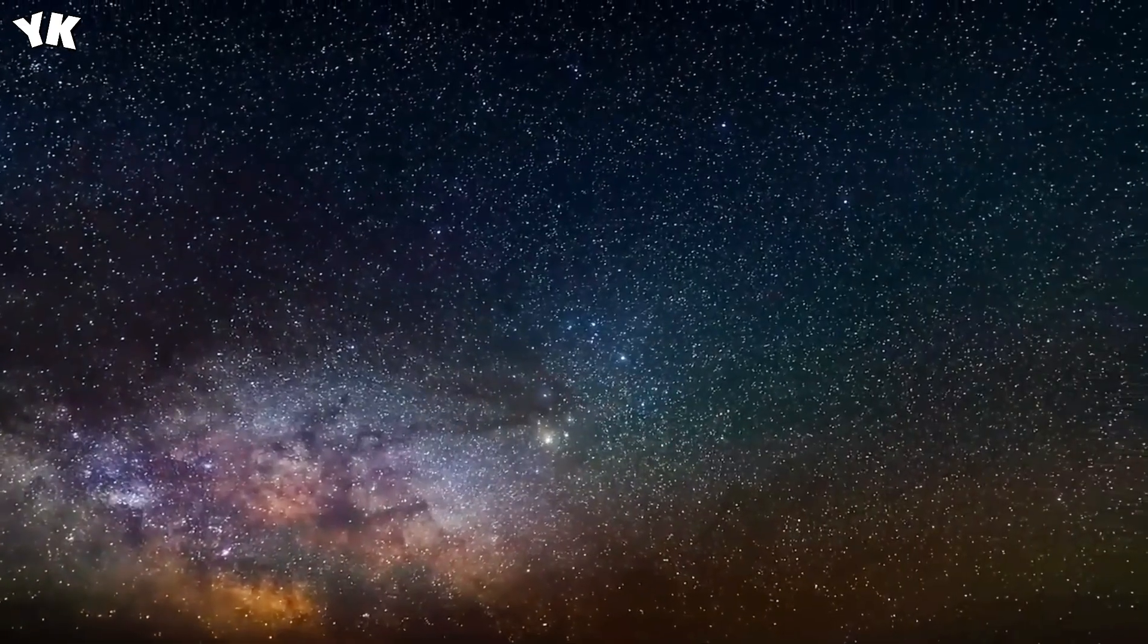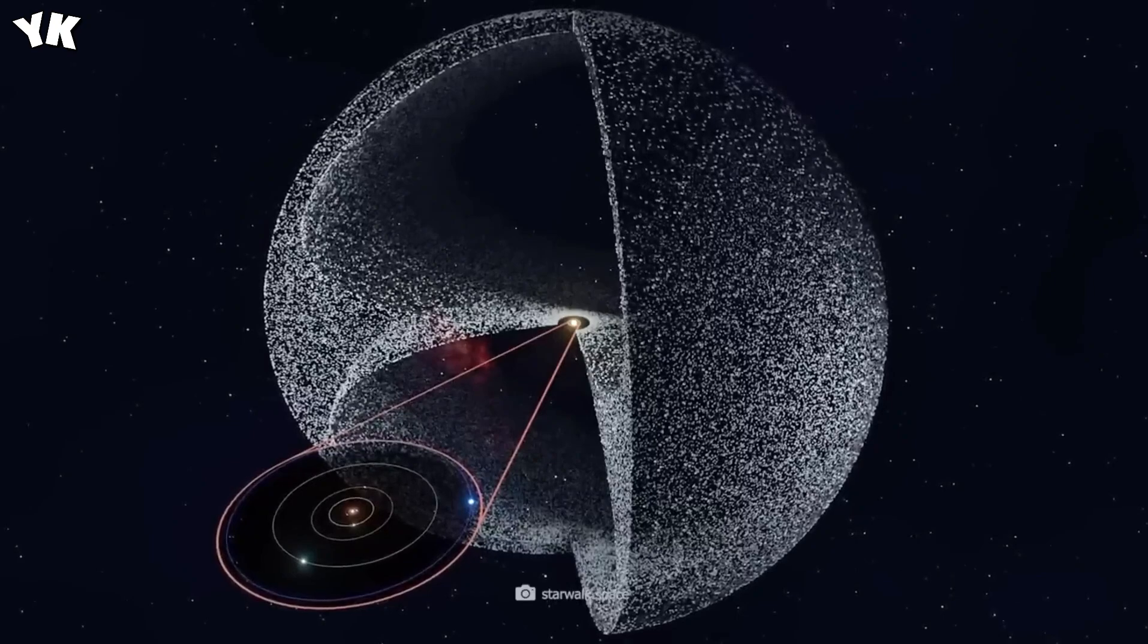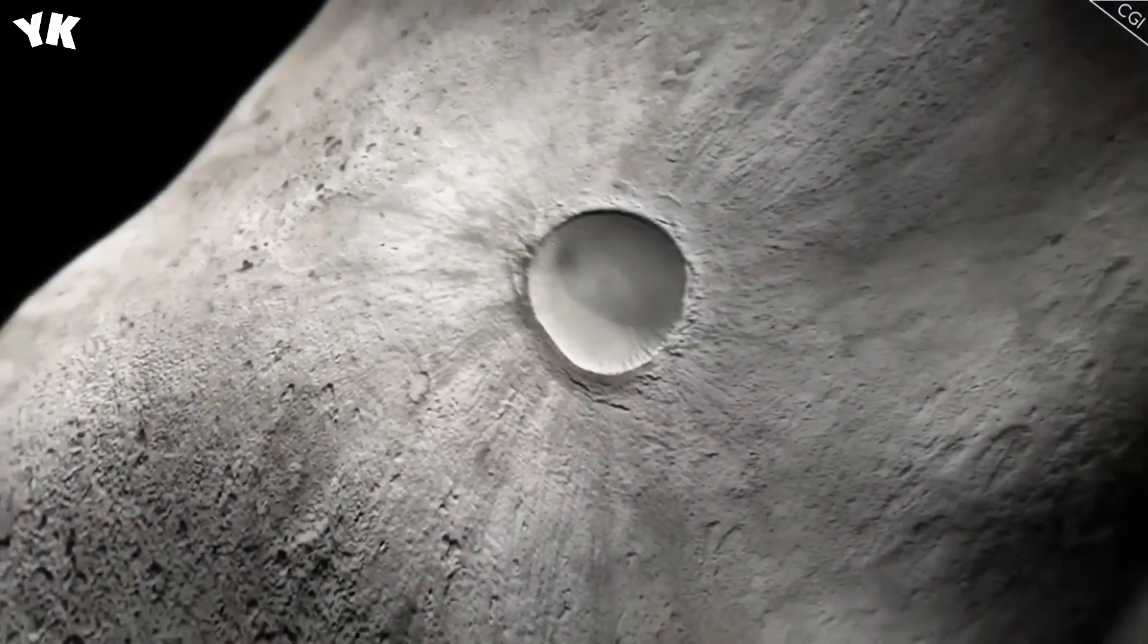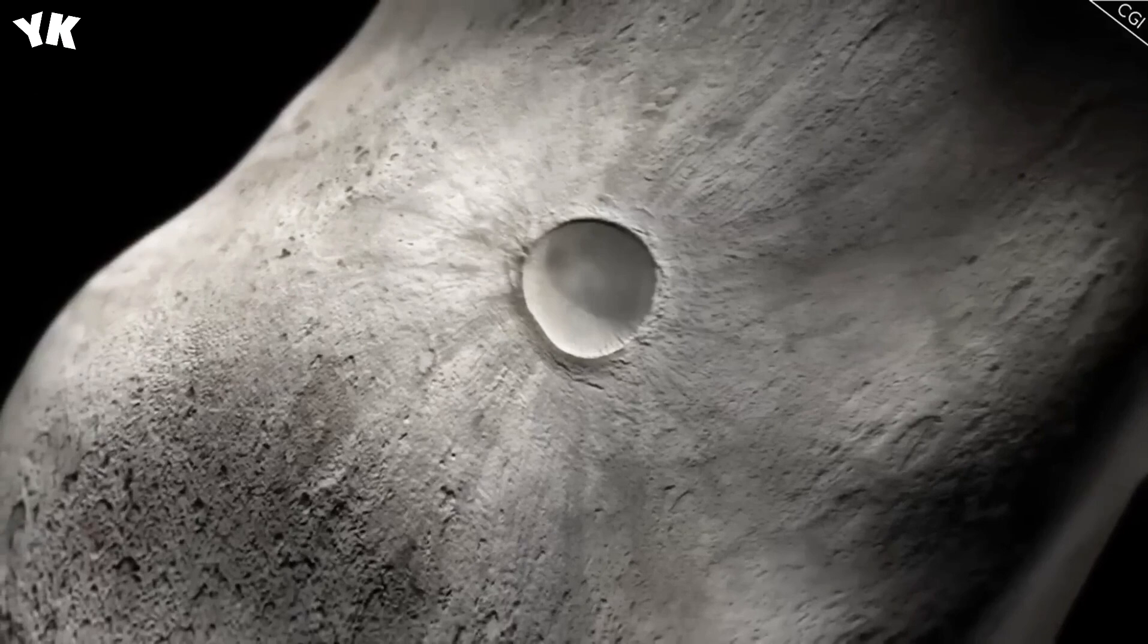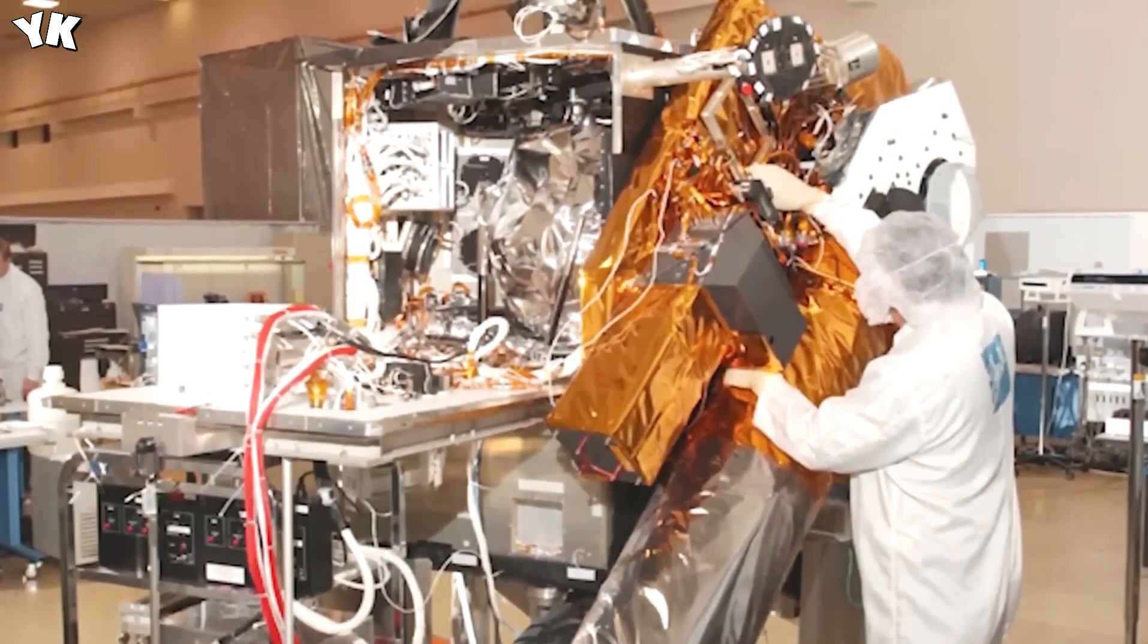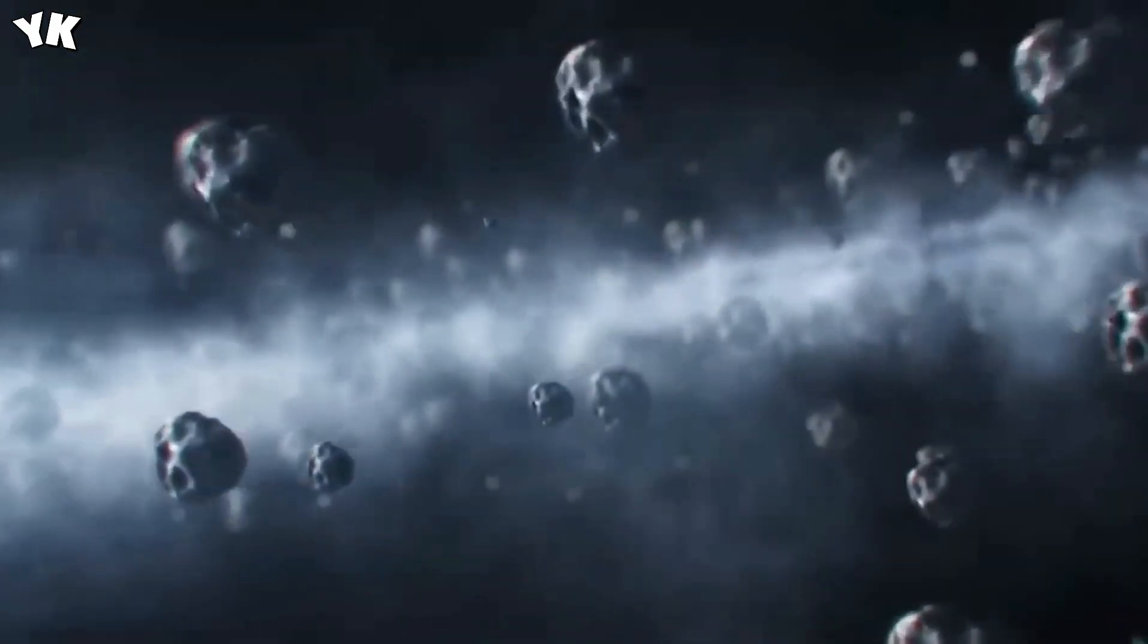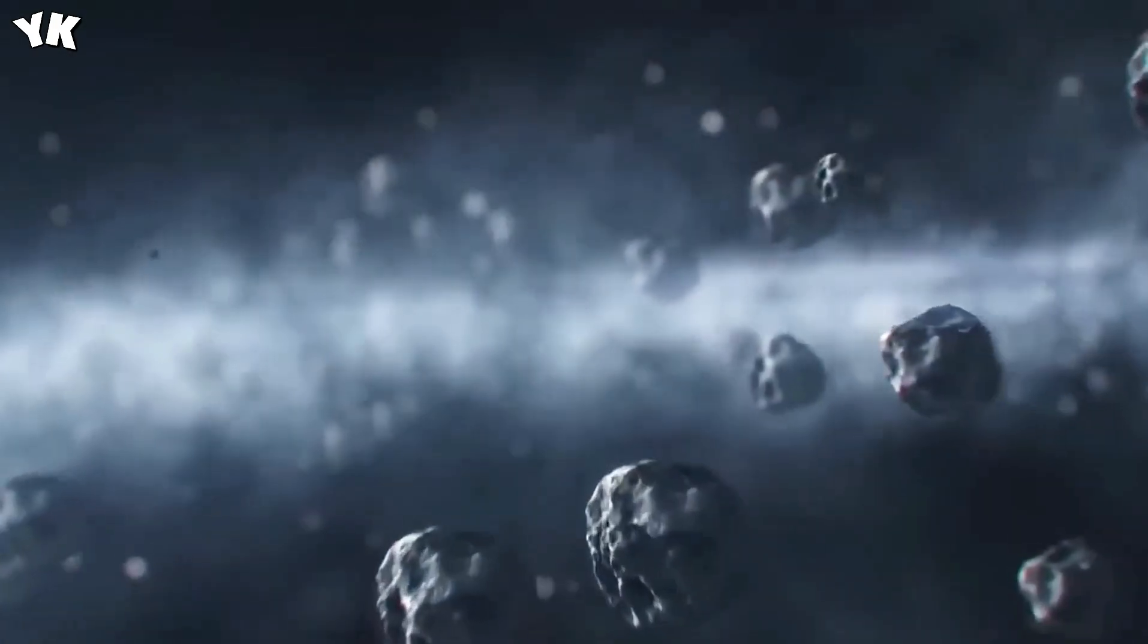Contrary to expectations of a mundane surface, Wild 2 revealed a landscape adorned with towering spiky pinnacles, cliffs, and dynamic jets of dust and gas, even on portions shielded from the sun. Strikingly absent were craters - a rarity among celestial bodies exposed to space. This absence of impact features underscores the comet's dynamic nature, suggesting processes that continually renew its surface, concealing evidence of past collisions. This revelation challenged conventional understanding, highlighting the dynamic and evolving nature of cometary bodies. During the flyby, Stardust's aerogel collector was exposed, eagerly awaiting the incoming dust particles.